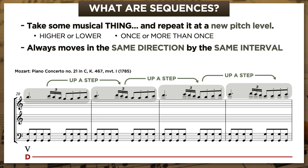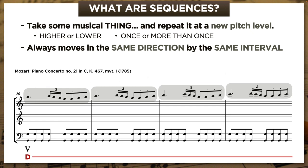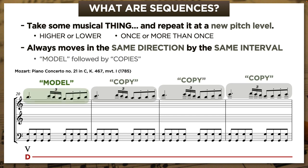He took a melodic motive and moved it up by step three times. That's a sequence. Within the sequence, we have special names for the different instances of the motive. The first one is called the model, and then the rest of them are called copies. So every sequence will have a model and at least one copy. Many have more than one copy—this one has three.